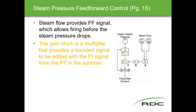To implement feed forward, we introduce additional components into the SAMA diagram. Steam flow is measured and brought into a summing block. The key addition is a gain multiplier block — the gain block provides a boosted signal that gets added with the PI signal from the pressure transmitter in the summing block, and then that combined signal is provided to the firing rate demand.